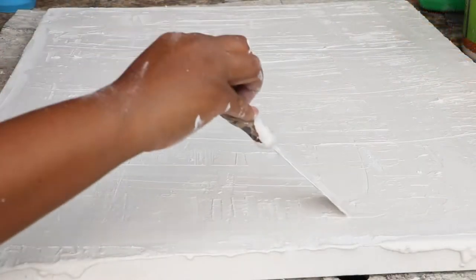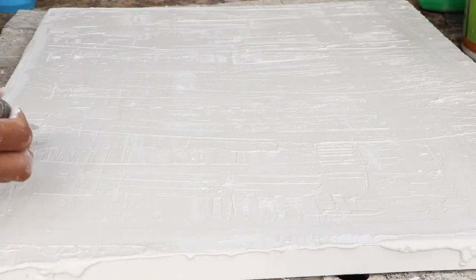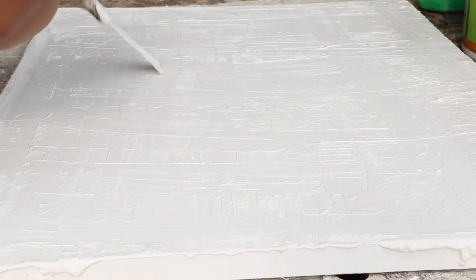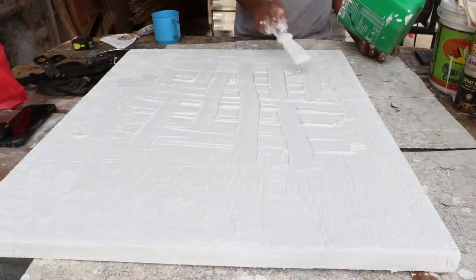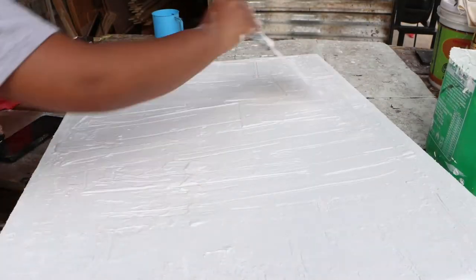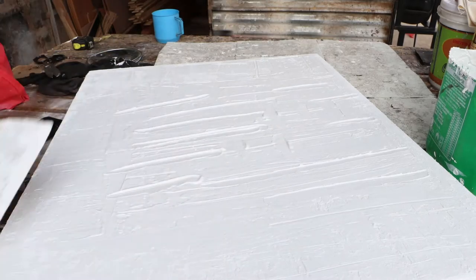I then took a smaller scraper and created some random shapes with the filler. I kept repeating the process by adding more paste and using different sizes of scrapers until I was satisfied with the results.